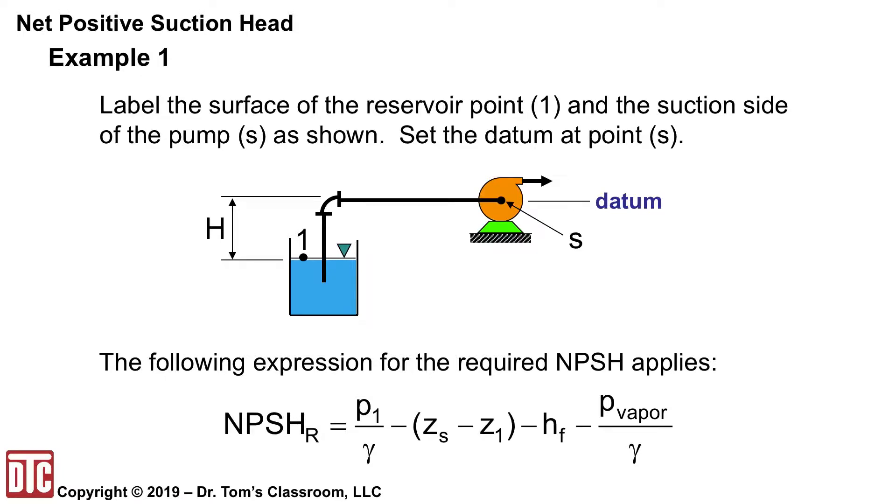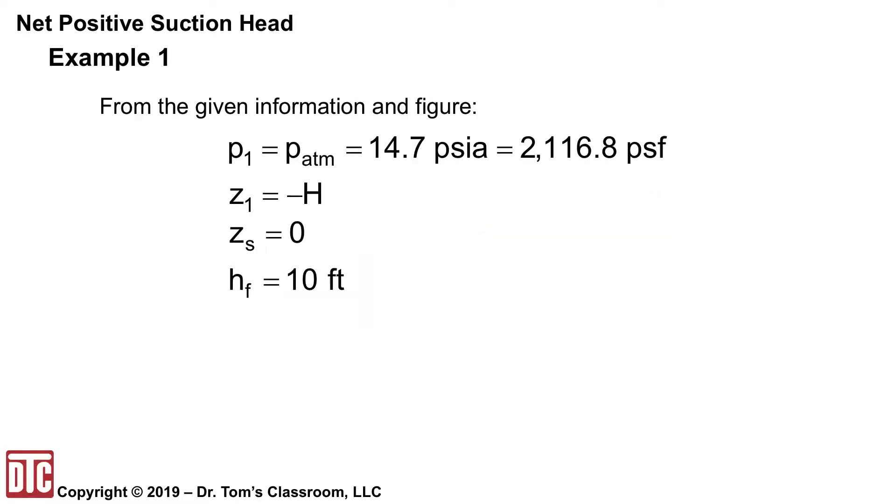So the NPSH required will be on the left hand side P1 over gamma. Of course, that's going to be atmospheric. ZS is the datum. So that'll be zero. Z1 is going to actually be the H and then HF is given and then the P vapor over gamma we're going to need to find along with the gamma.